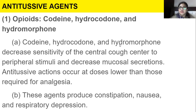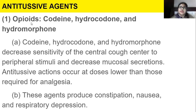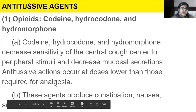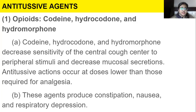Antitussive agents include opioids. Codeine, hydrocodone, and hydromorphone decrease sensitivity of the central cough center to peripheral stimuli and decrease mucus secretion. Antitussive actions occur at doses lower than those required for analgesia. These agents produce constipation, nausea, and respiratory depression.